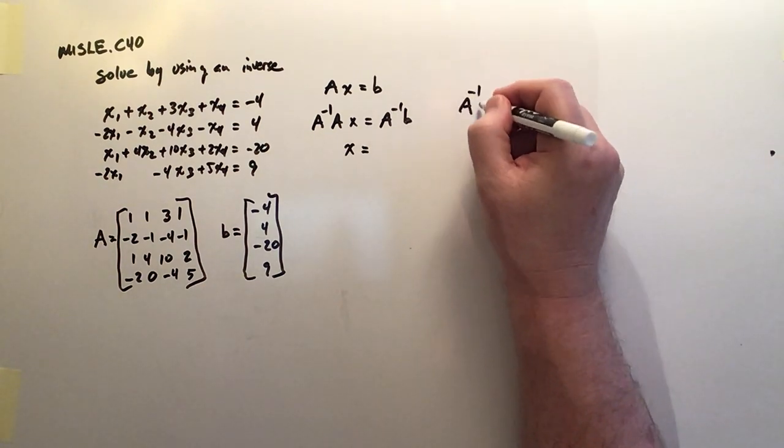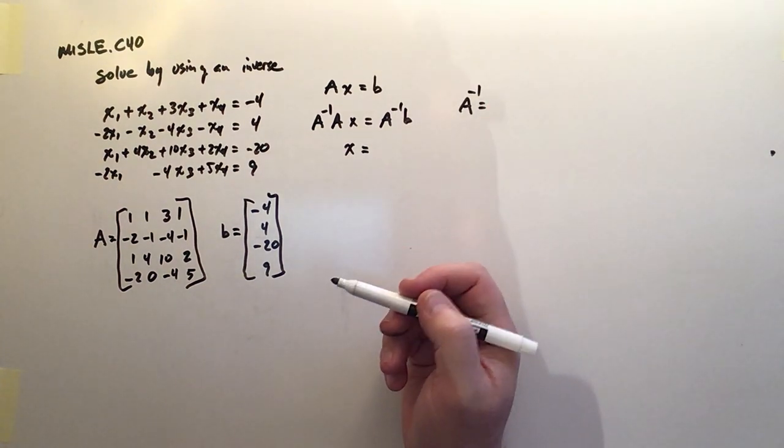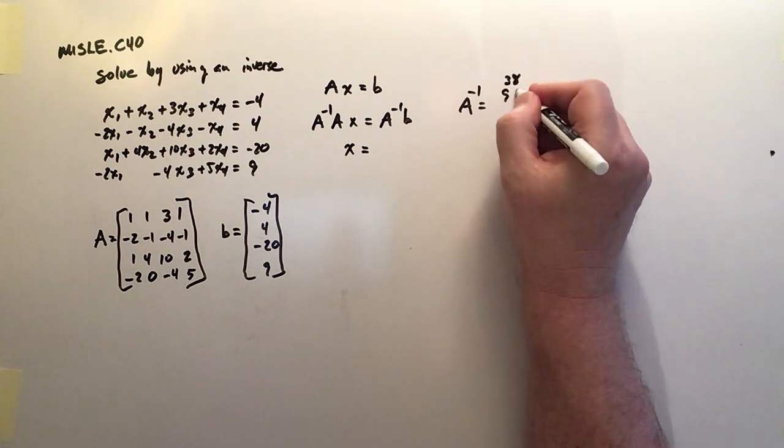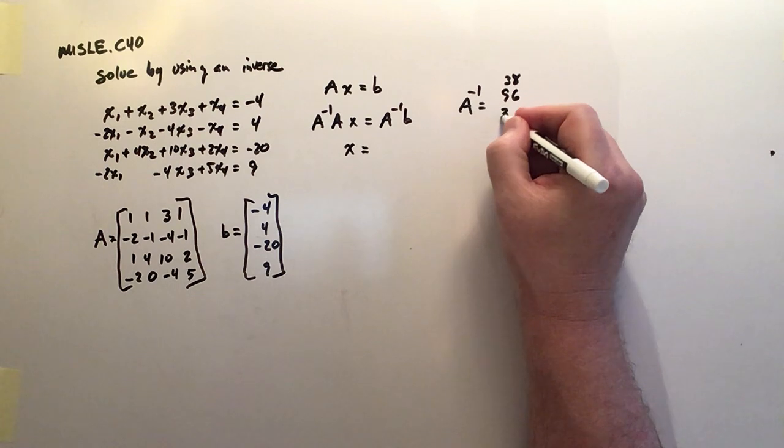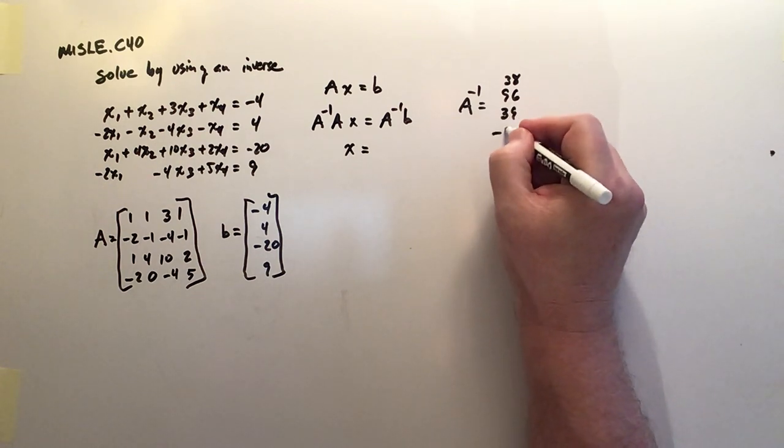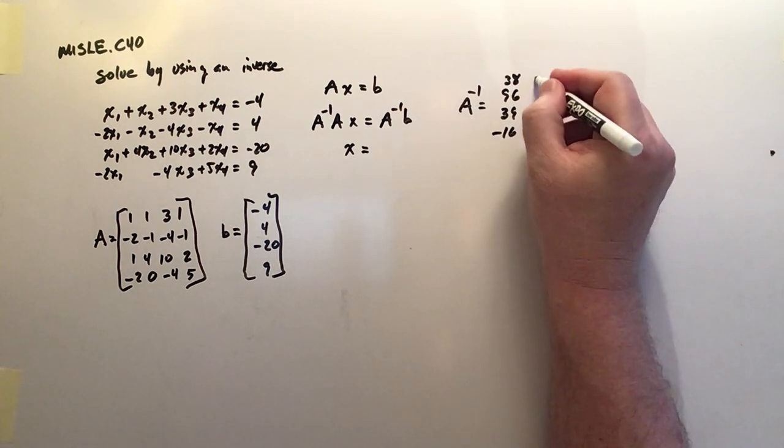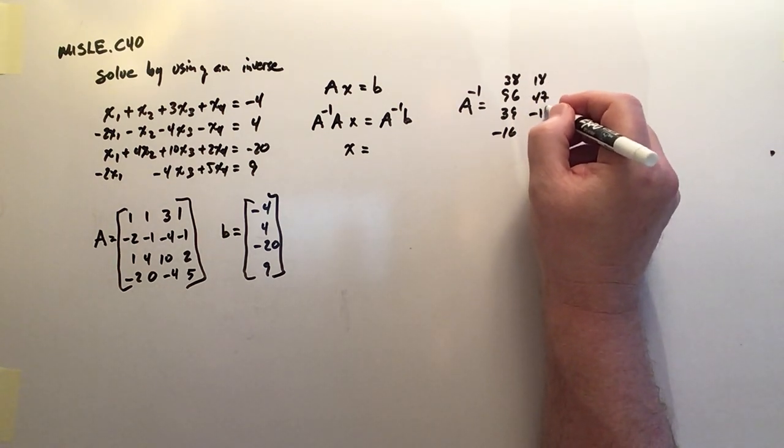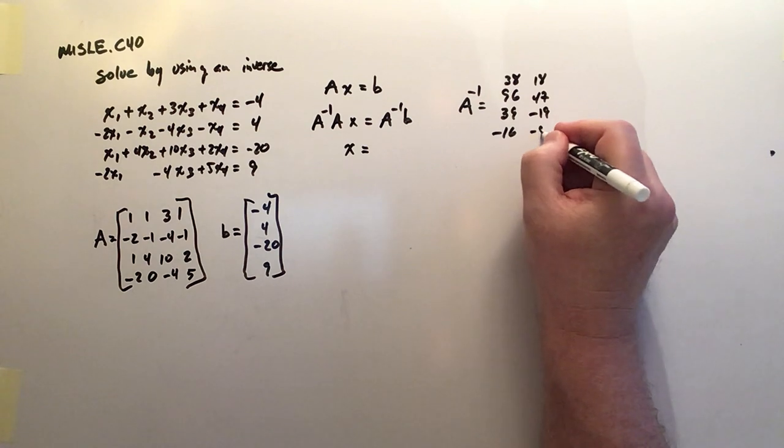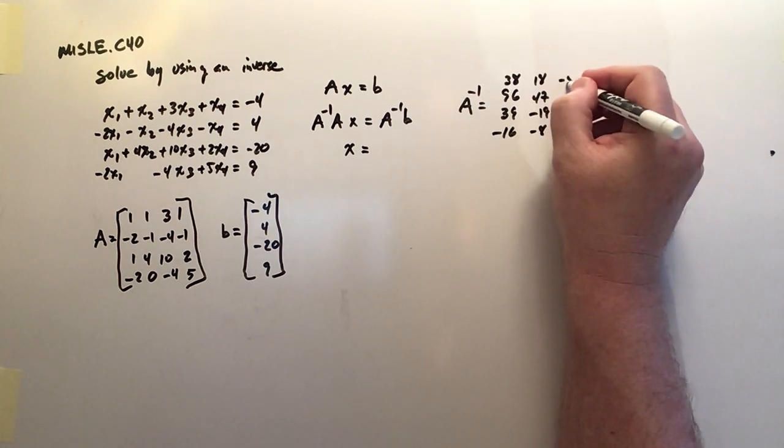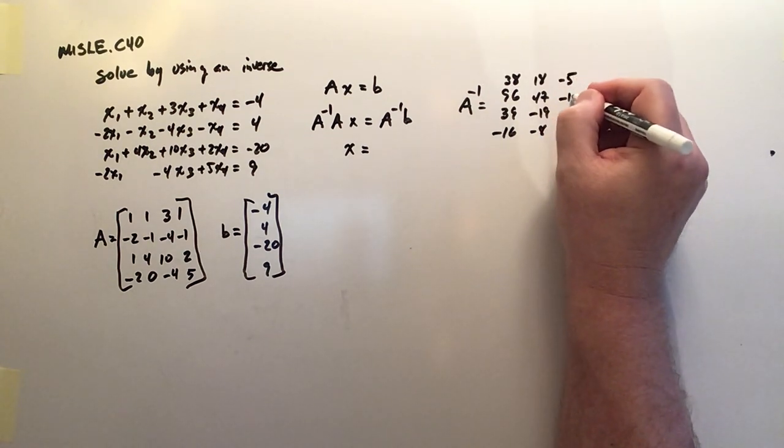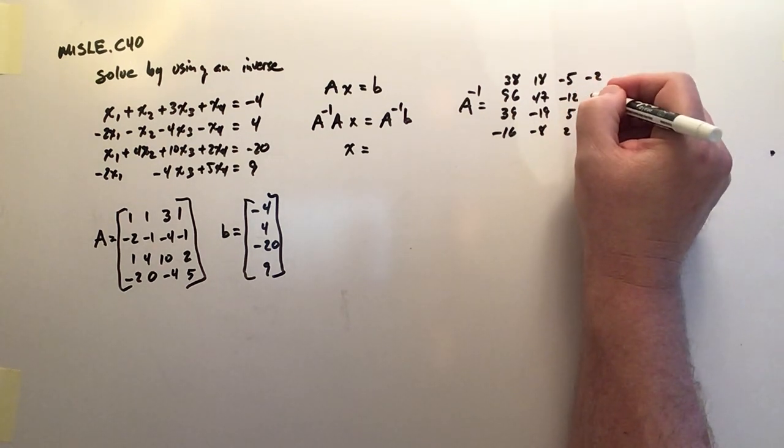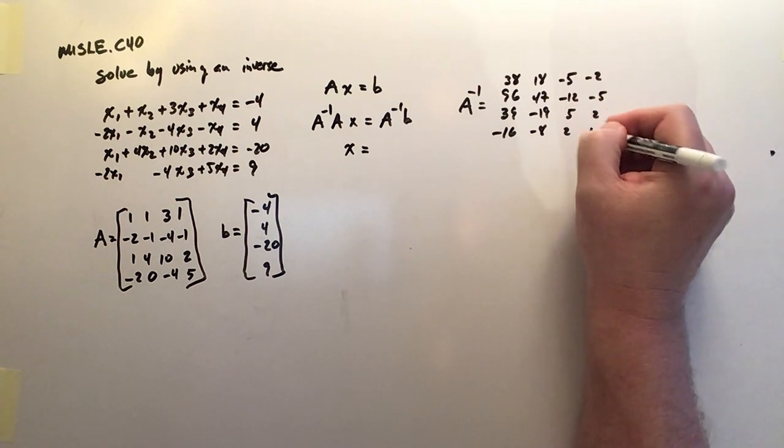So here's my A to the minus 1. That is the inverse matrix. And it's nasty. It's 38, 96, 39, negative 16, 18, 47, negative 19, negative 8, negative 5, negative 12, 5, 2, and then the last column is negative 2, negative 5, 2, and 1.